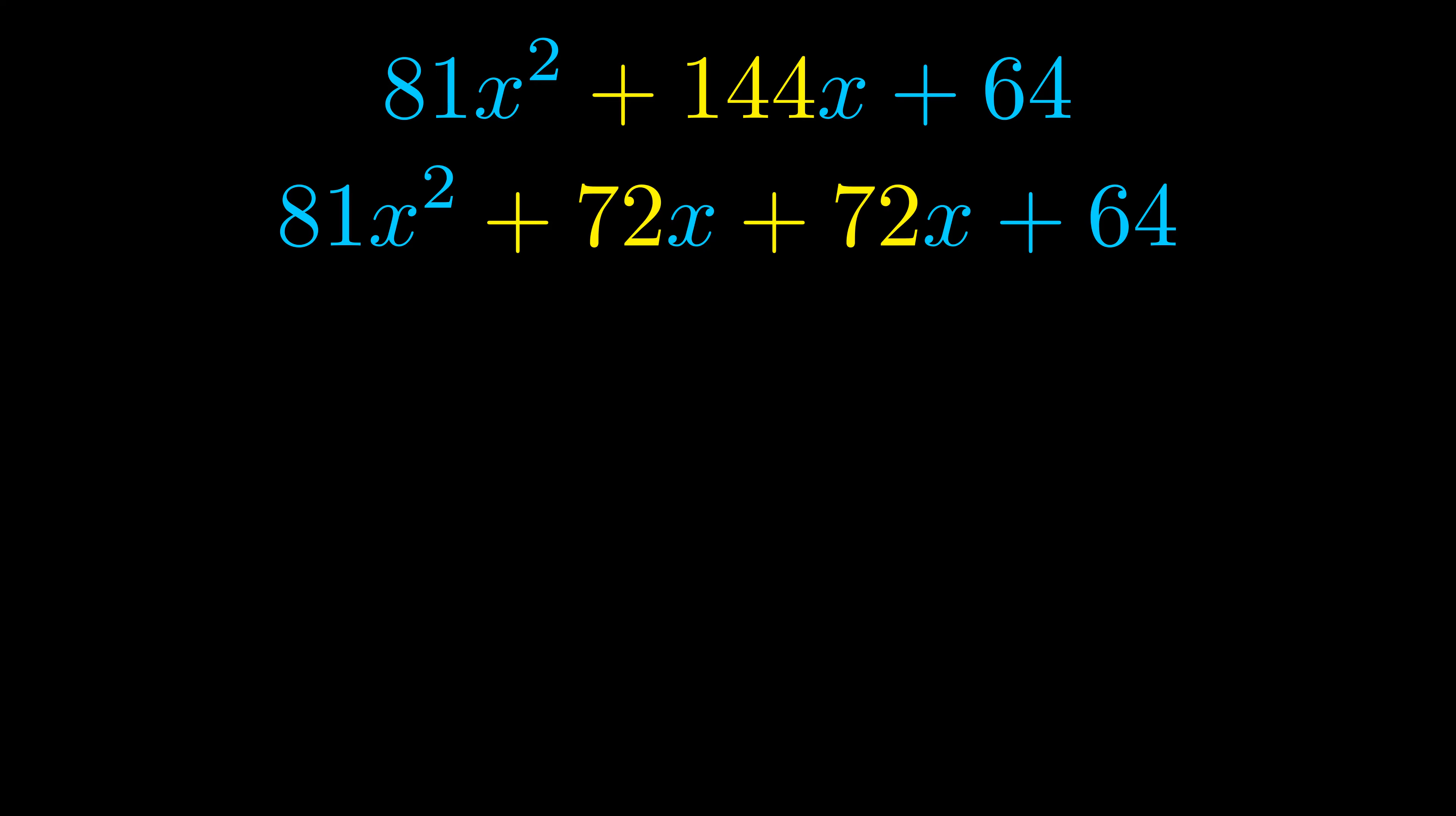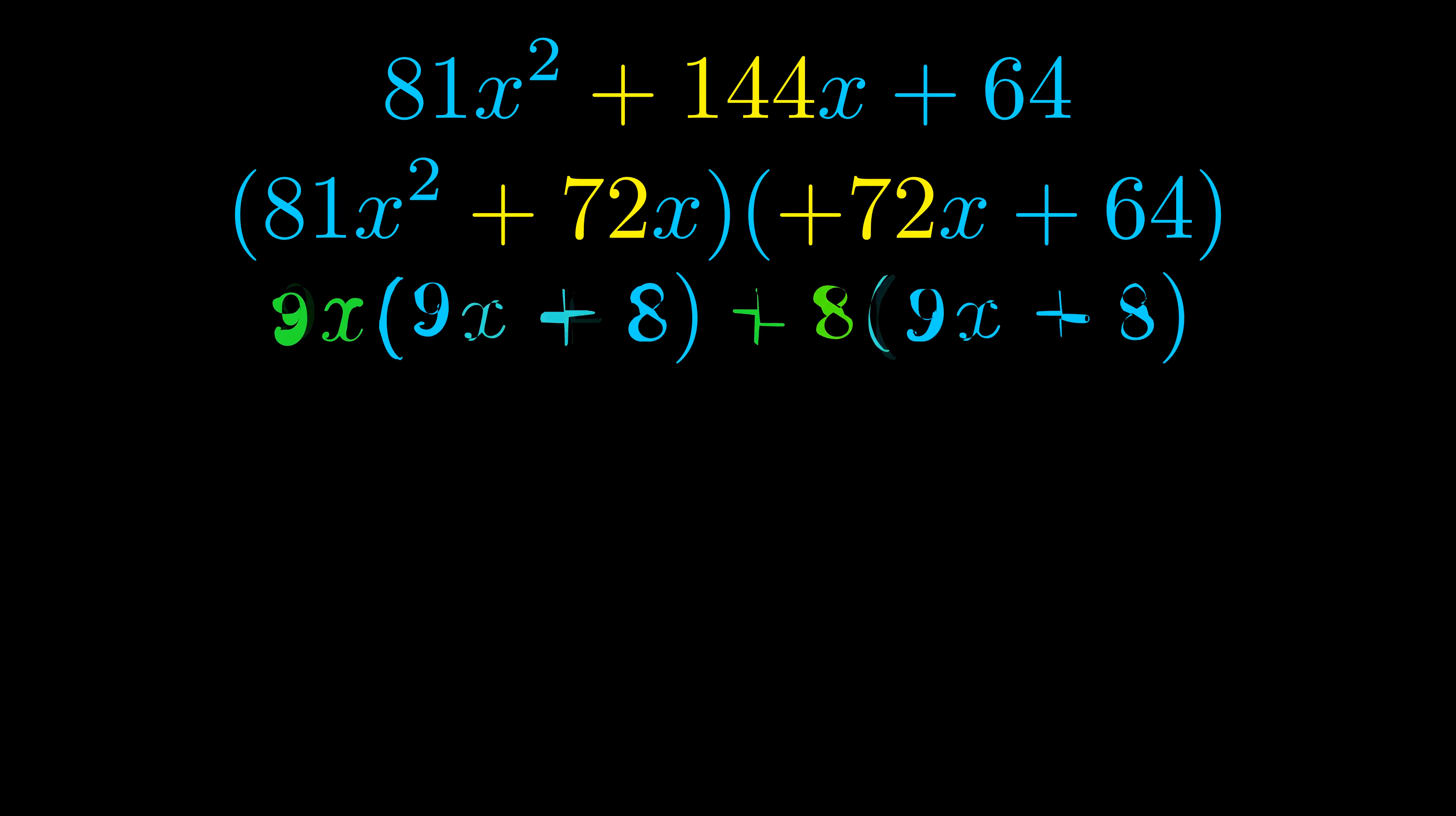Once we've done this, we go ahead and put parentheses around the first term and the last term. And we do that so that we can take the greatest common factor out of both terms. We can see the greatest common factor is now outside in green.